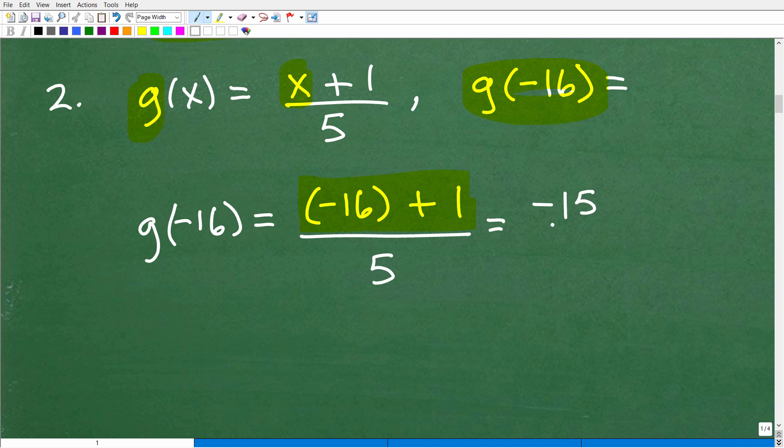So negative 16 plus 1 is negative 15 over 5. A negative divided by a positive is going to be a negative. So this is going to be 15 divided by 5, which is, of course, 3, or negative 3. So g of negative 16 is equal to negative 3. What do we do here? We evaluated the g function for negative 16, and this is the answer.